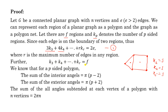From geometry, for a p-sided polygon the sum of interior angles is π(p - 2), the sum of exterior angles is π(p + 2), and the sum of all angles subtended at each vertex of a polygon net with n vertices is 2πn, since the total angle at each vertex is 2π.